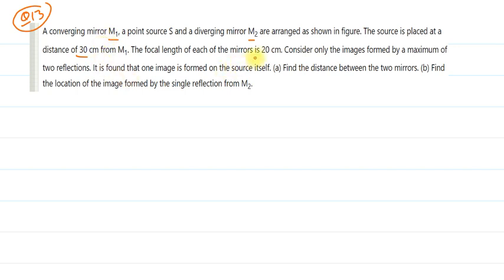The focal length of both mirrors is 20 centimeters. Consider only the images formed by a maximum of two reflections. We have to do two reflections, and after two reflections the image is formed on the source itself. That is the condition in the question. Find the distance between the mirrors and the location of the image formed by single reflection from M2.